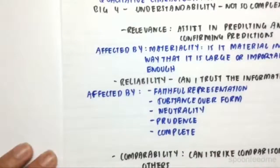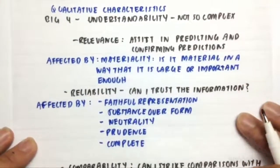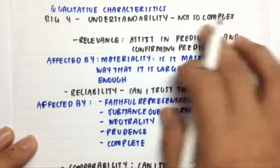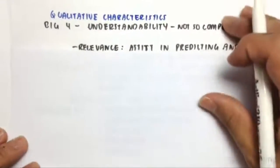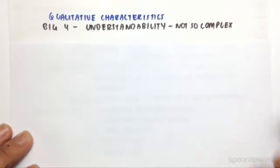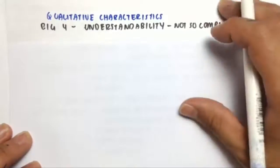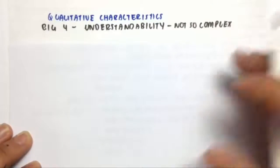And then lastly, we'll move on to the qualitative characteristics. So the big 4, the first one is understandability. So it has to be not so complex so that people that should know how to read or understand our financial statements, they should be able to understand it. It doesn't mean everyone needs to be able to understand it, just the people that should know are able to.